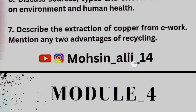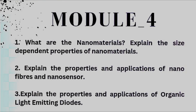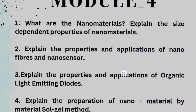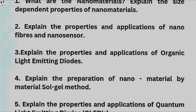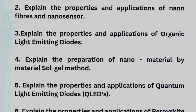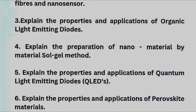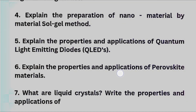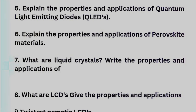Next we have Module 4, which has some super important questions: what are nanomaterials? Explain the size-independent properties of nanomaterials. Explain the properties and applications of nanofibers and nanosensors. Explain the properties and applications of organic light emitting diodes (OLEDs). Next, explain the preparation of nanomaterials by the sol-gel method. The fifth question is: explain the properties and applications of quantum light emitting diodes (QLEDs) and explain the properties and applications of perovskite materials.